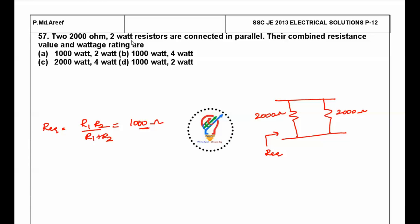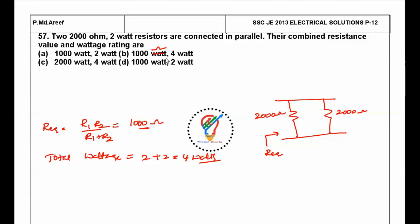For the wattage: two watt resistors are connected in parallel, so the total wattage is 2 plus 2, which is 4 watts. So the answer is 1000 ohms and 4 watts.